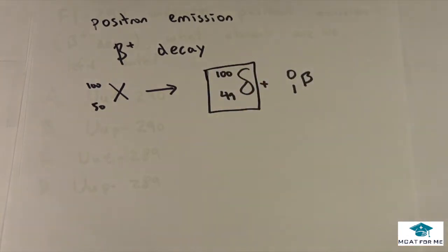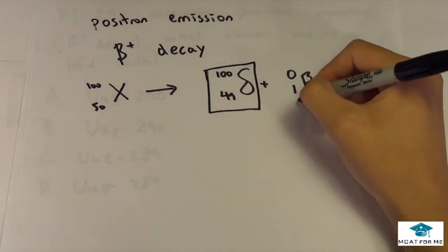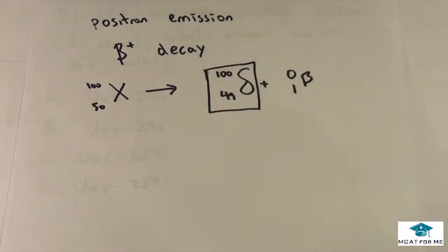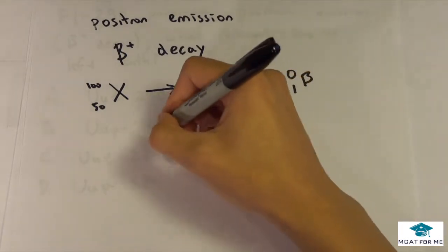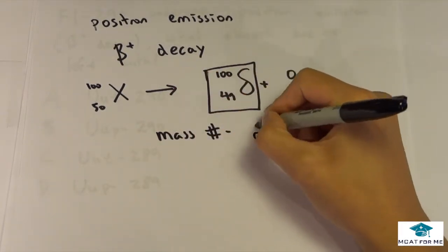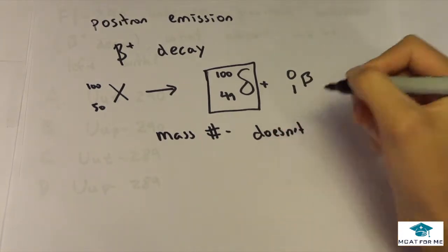So whenever we're releasing a positron, we release this 0, 1 and we just have to figure out what this delta and what these numbers should be on top and bottom. So we know that the mass number, it doesn't change, and this is specific for positron emission.